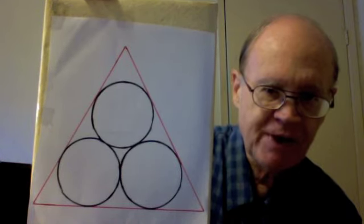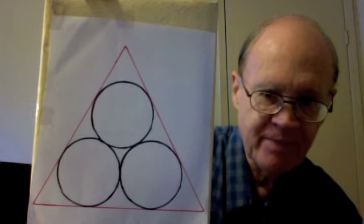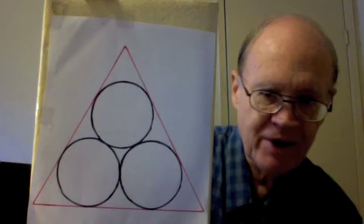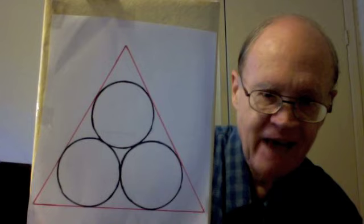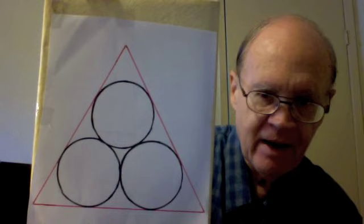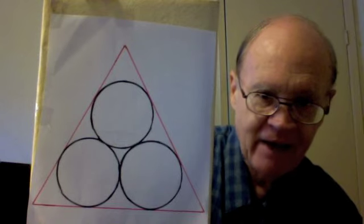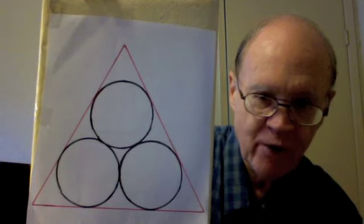Suppose that the length of each side of the triangle is n units. My question is: in terms of n, what is the exact length of a radius of any of the circles? I'm asking for the exact length, not a decimal approximation. Your answer should contain a square root.